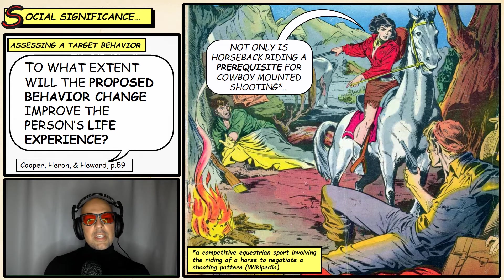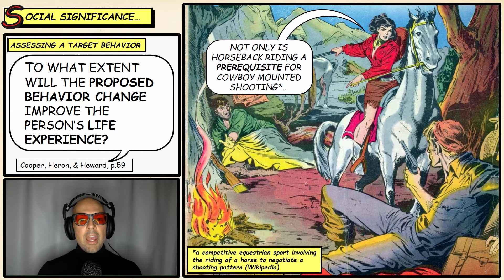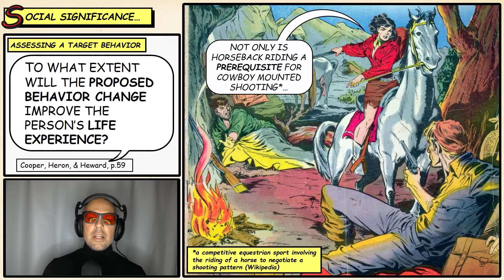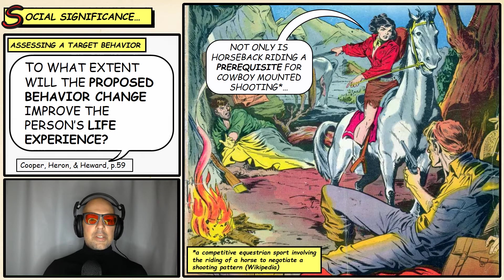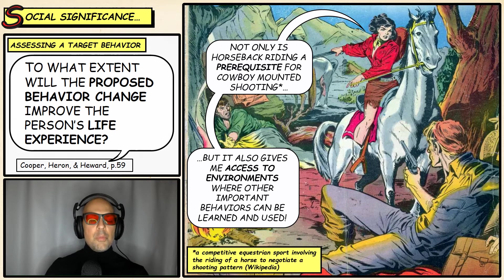Another question we ask is whether the target behavior will increase the client's access to environments where other important behaviors can be learned and used. The behavior might not be useful in a particular environment, but it might allow access to other environments. For example, in an extreme case, horseback riding would increase a client's access to other environments, allowing them to travel to areas where new behaviors can be learned and used.